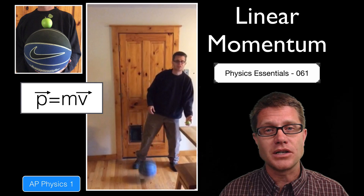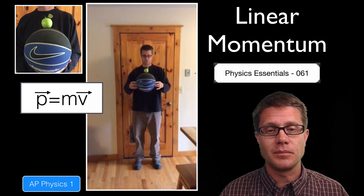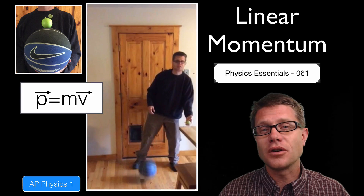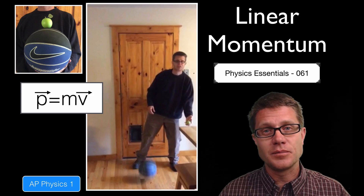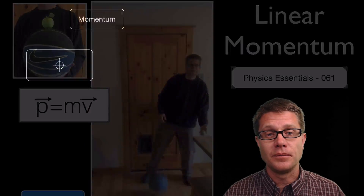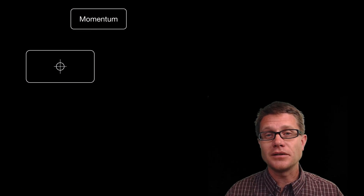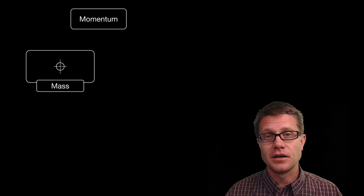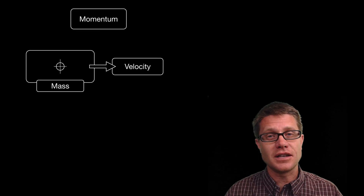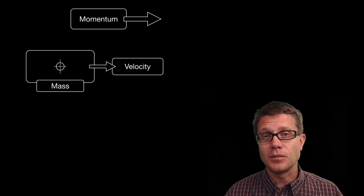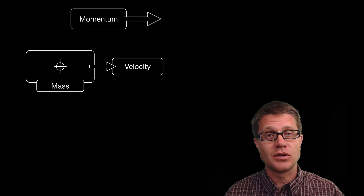This time instead of watching the apple, watch what happens to the basketball. You see it does not go very far. That is because it is transferring a lot of that momentum to the apple. So momentum is a product of two things: it is the mass of an object times the velocity of the center of mass of that object, and that velocity and the momentum are going to be in the same direction.